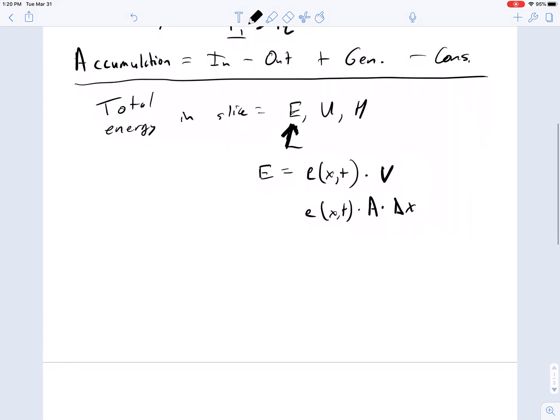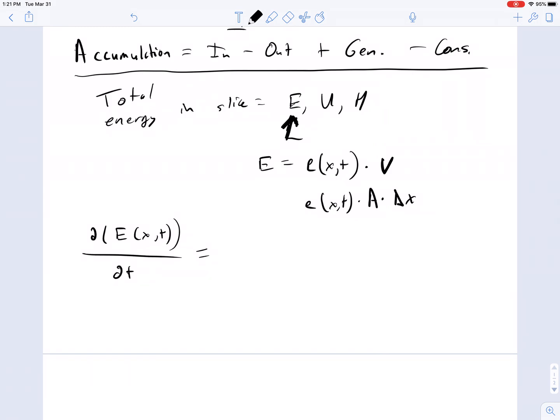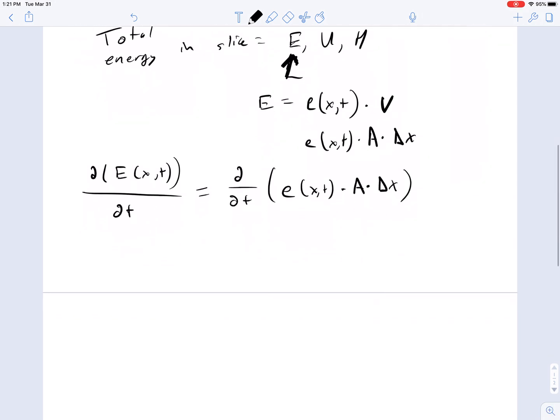One thing we're going to do is a derivative for what's happening inside this shell. Because it's got two variables, we're going to treat it with partial derivatives because it can depend on more than one independent variable. We're just going to know that in some small change in time, there is a flow of energy into and out of this. This is del by del t of E(x,t) times A times delta x.